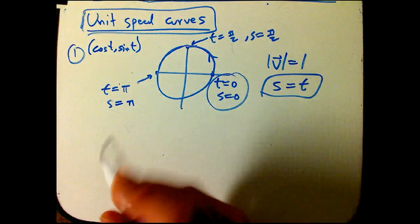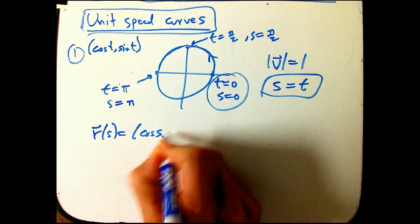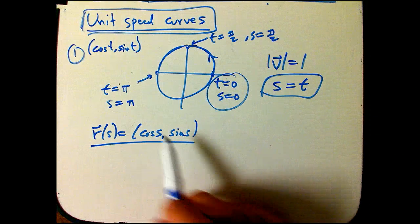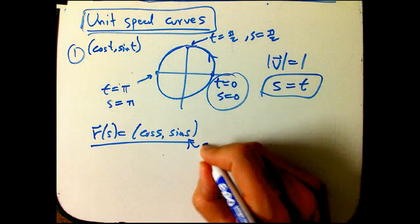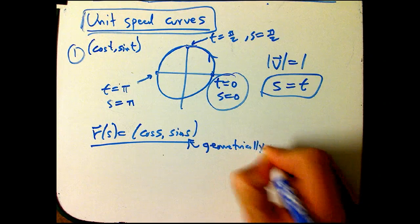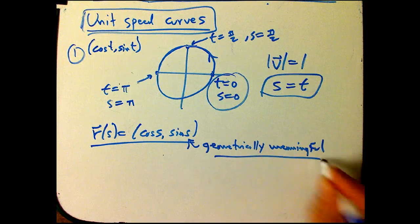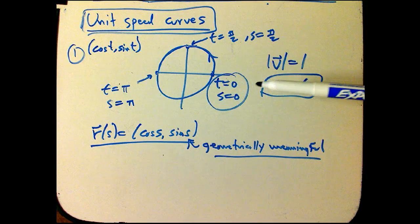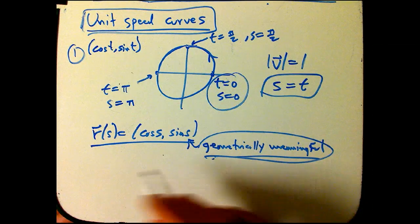So we could equally well say that this is r of s is cosine s, sine s, and completely erase the arbitrary t that's not geometric and replace it with a geometrically meaningful quantity. So this is very nice because we happen to have a unit speed curve to start with. The parameter we were given, t, which often has nothing to do directly with the geometry, was identical to s, which is geometrically meaningful.